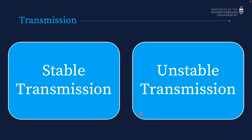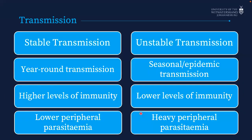When we talk about malaria, we talk about stable and unstable areas of transmission. In areas of stable transmission — your central Africa — there is year-round transmission, meaning the population has higher levels of immunity and lower peripheral parasitemia when infected. In areas of unstable transmission such as South Africa, we don't have malaria in winter months. Seasonal epidemic transmission means people have lower levels of immunity and very heavy peripheral parasitemia when infected.